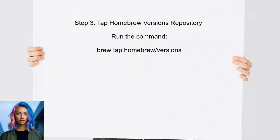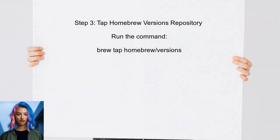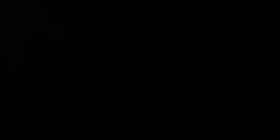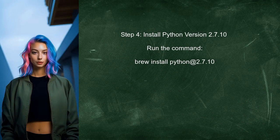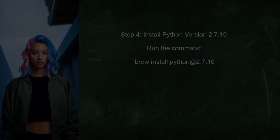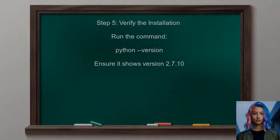After uninstalling, tap into the Homebrew versions repository. This allows access to older versions of software, including Python. Now you can install the specific version you need — in this case, Python version 2.7.10. Finally, verify that the downgrade was successful by checking the installed version of Python again.